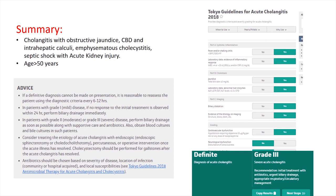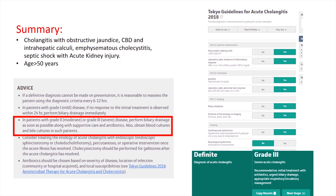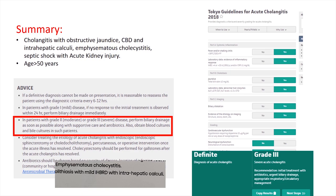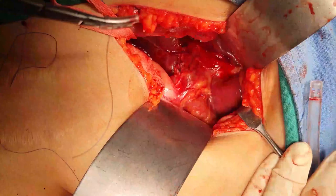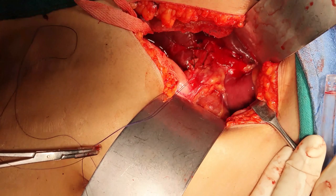The management protocol would be straightforward biliary drainage with cholecystectomy. We planned for cholecystectomy, choledocholithotomy, extraction of intrahepatic calculi as far as possible, and drainage of bile via T-tube. The main target of this surgery was draining bile from at least 30% of the liver so bilirubin level drops below 2.0 and to revive the patient from septic shock and organ failure.